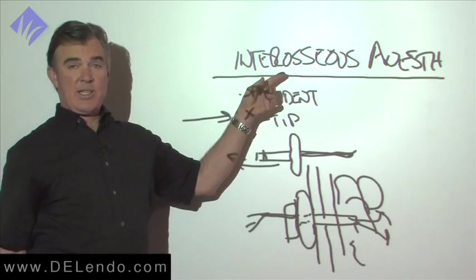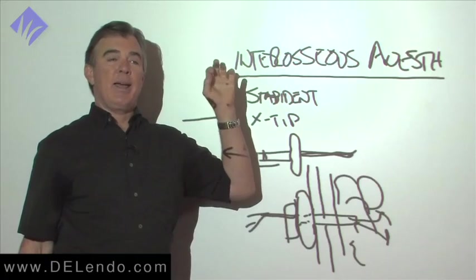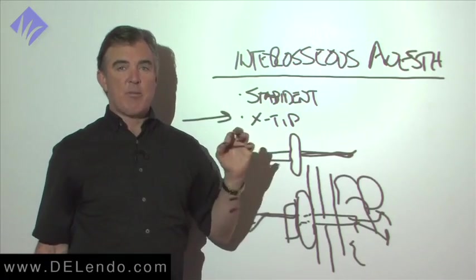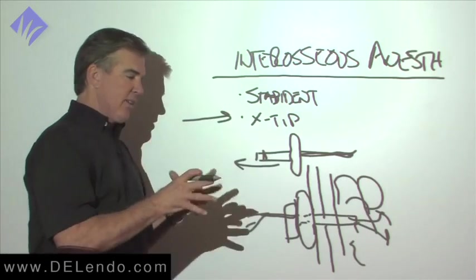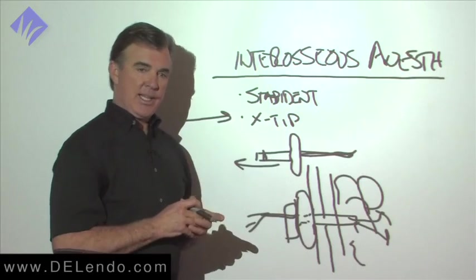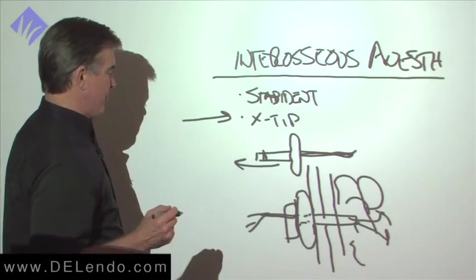With interosseous anesthesia, they are numb immediately. At the moment you inject. You can put ice on it and feel that, see that tooth becoming less and less sensitive as a second or two goes by.